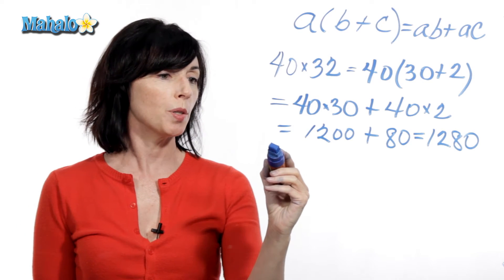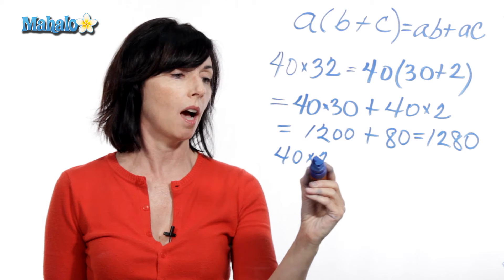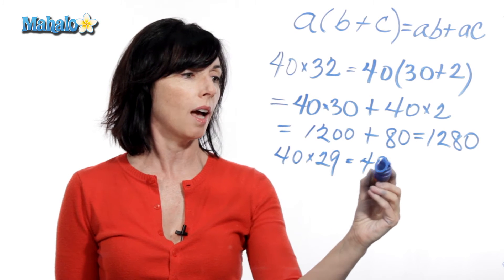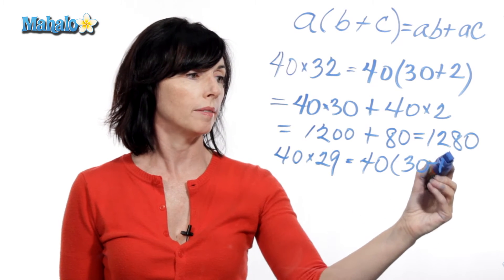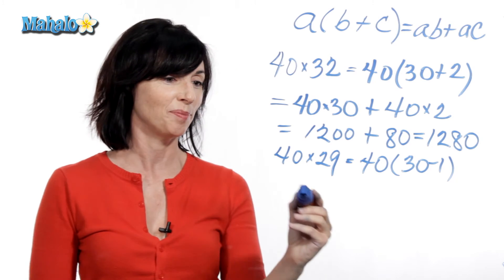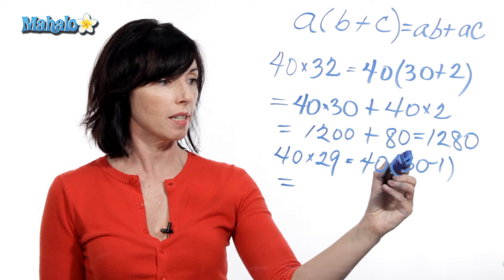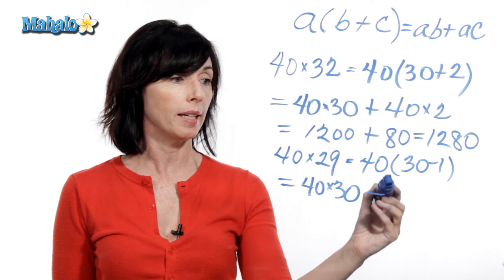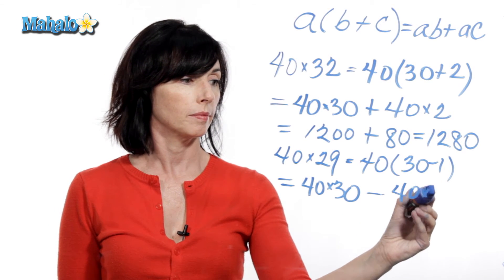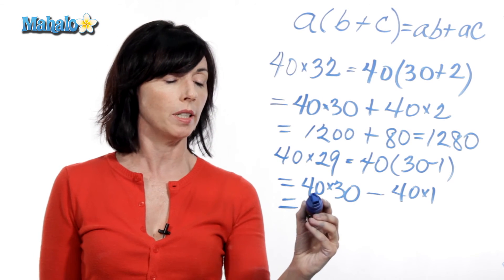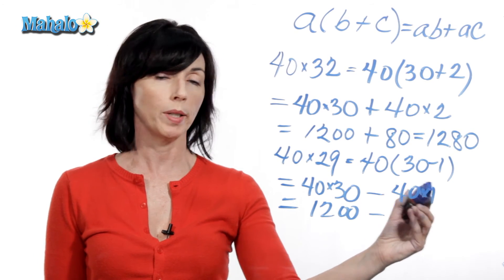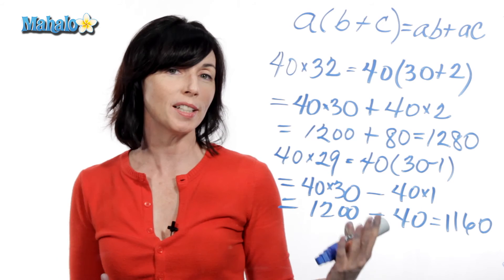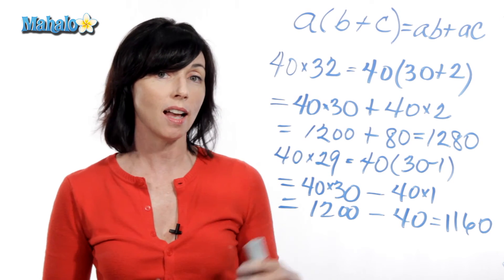Let me give you one more example. Suppose we have 40 times 29. That doesn't really look too appealing, but I can make it easier. I'm going to rewrite 29 as 30 minus 1, and now I'm going to use the distributive property again. I'm going to multiply 40 times 30, minus — because I have a minus sign here — minus 40 times 1, which is just 40, and that's 1160. So you can see, you can use the distributive property to make this kind of multiplication easier.